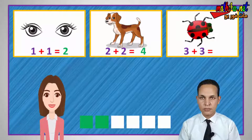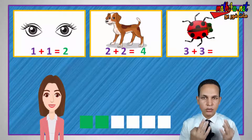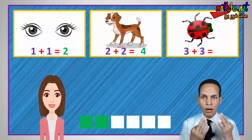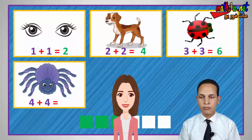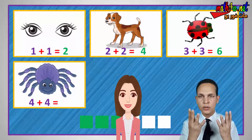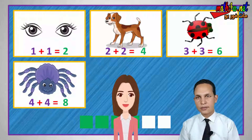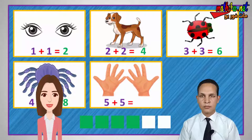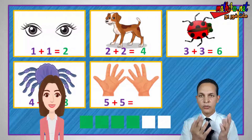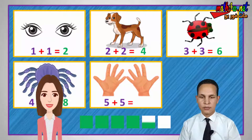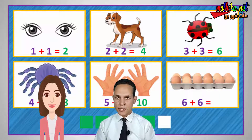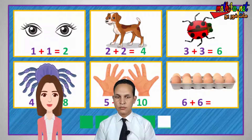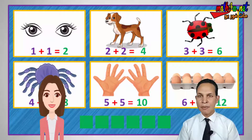Three plus three equals six — three legs plus three legs equals six legs. Four legs plus four legs equals eight legs. Five fingers plus five fingers equals ten — five plus five equals ten. Excellent! Six eggs plus six eggs equals twelve — six plus six equals twelve. Excellent!